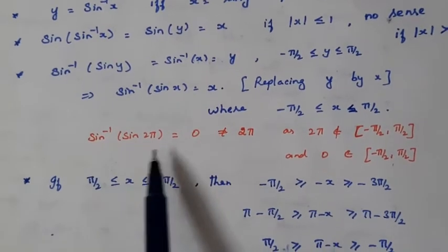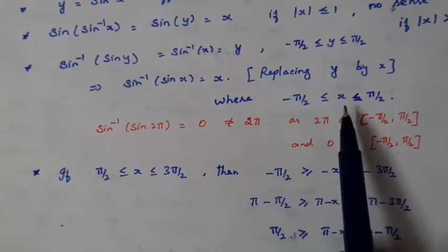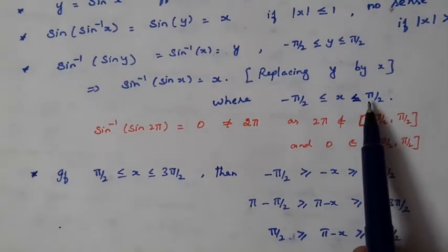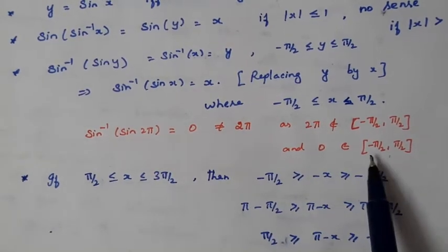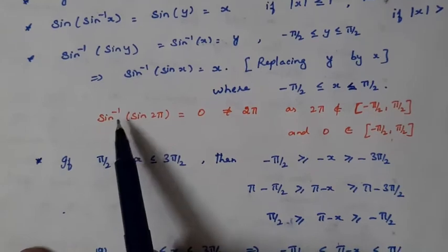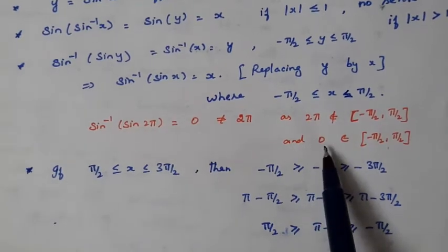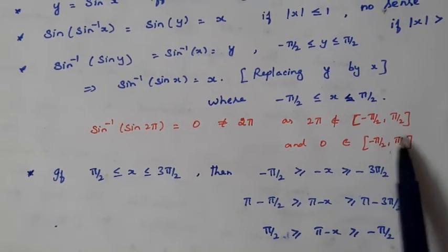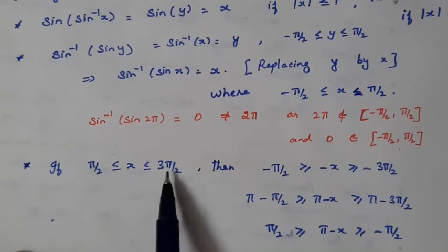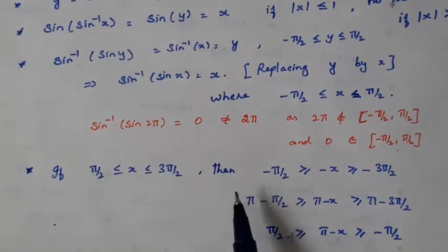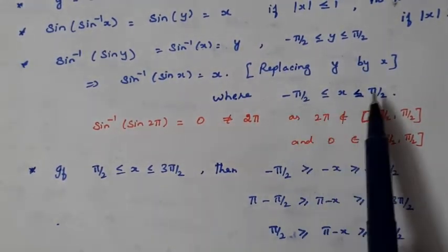Using this result, for sin⁻¹(sin 2π): we should not immediately write it as 2π, because 2π does not lie in the interval [−π/2, +π/2]. Since sin 2π = 0, and 0 belongs to the interval [−π/2, +π/2], sin⁻¹(sin 2π) = sin⁻¹(0) = 0. So sin⁻¹(sin 2π) = 0, not 2π.